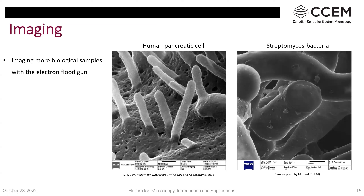More imaging examples using the electron flood gun on a helium ion microscope: a human pancreatic cell reported in literature with an 800 nanometer field of view resolves 0.8 nanometer features. An image generated here at the CCEM using the Orion Nanofab shows a bacterium prepared by Marcia, with superb surface details. The bacterium's surface is clearly visible, including areas of damage or disruption.